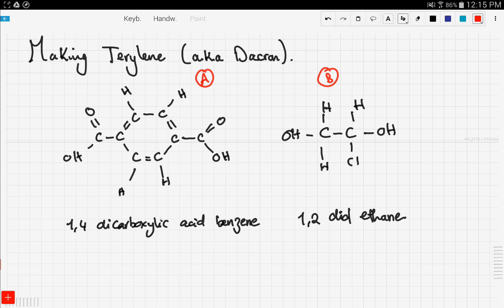The second compound we have is compound B, and it's 1,2 diol ethane. Now these two compounds are going to react to form our polymer, and we said that only the functional groups are the ones responsible for the whole process, so these are our functional groups.